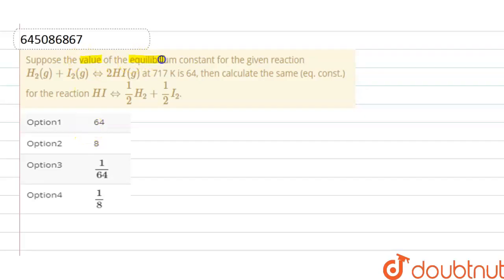Suppose the value of the equilibrium constant for the given reaction at 717 Kelvin is 64, then calculate the same for the reaction. So here we have to find out the equilibrium constant for this given reaction.